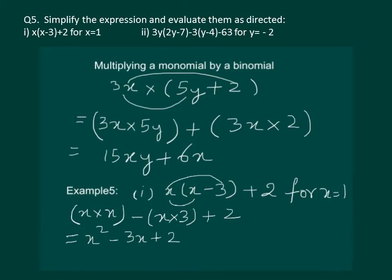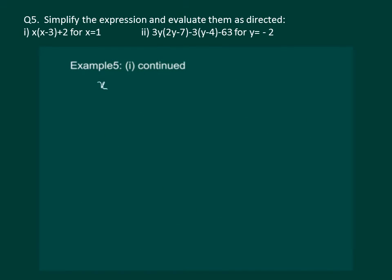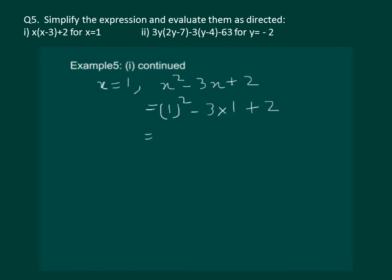Now we will substitute x equal to 1 in this expression: x squared minus 3x plus 2. So let us substitute the value of x equal to 1 in our algebraic expression x squared minus 3x plus 2, which gives us 1 whole square minus 3 times 1 plus 2, which gives us 1 minus 3 plus 2.